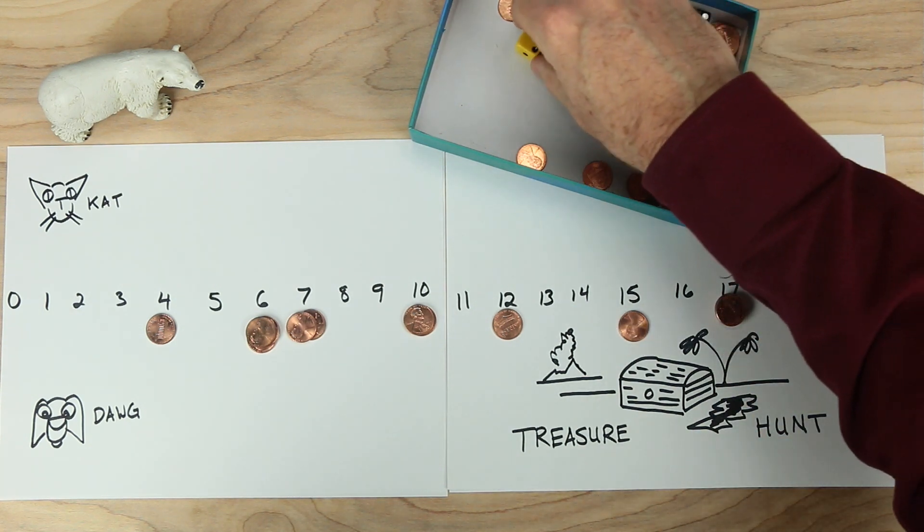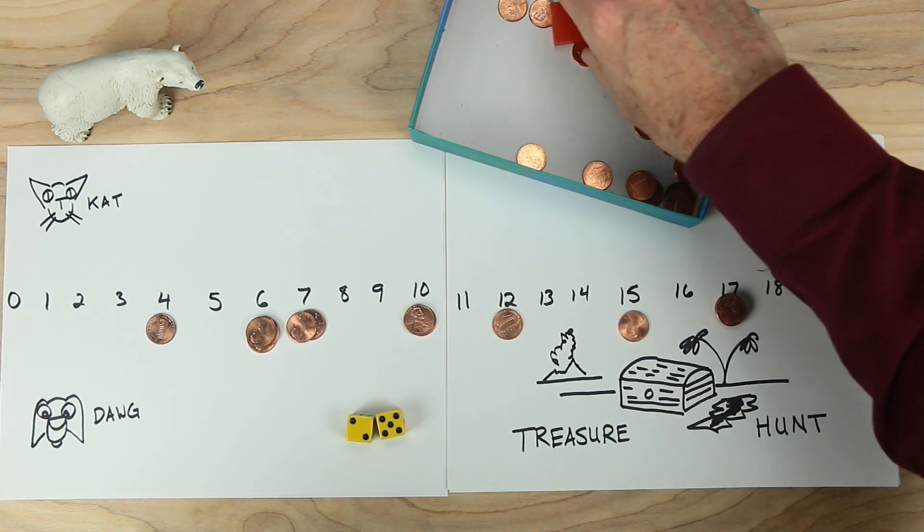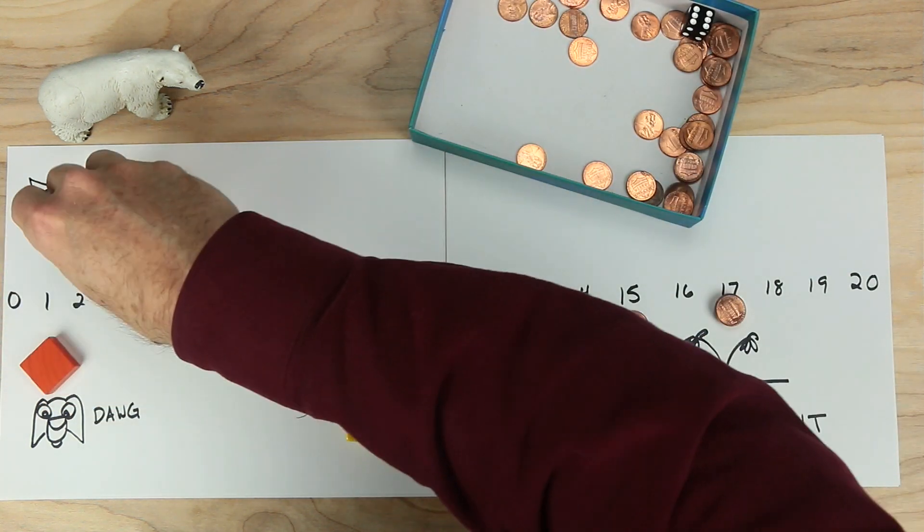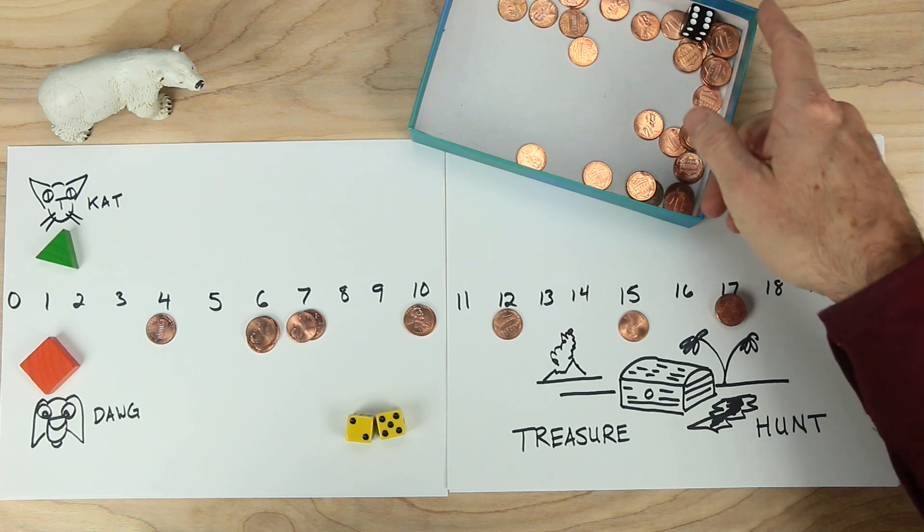And now we'll need the dice. We need two dice. And we'll need two player pieces. Dog will be the square and cat will be the triangle. And we're ready to play.